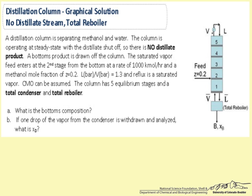This example shows how to use a McCabe-Thiele graphical solution to solve for a distillation column when there is no distillate stream and a total reboiler. The distillation column is separating methanol and water. The column is operating at steady state with the distillate shut off, so there is no distillate product. A bottoms product is drawn off the column. The saturated vapor feed enters at the second stage from the bottom at a rate of 1000 kmol/hr and a methanol mole fraction of Z = 0.2.